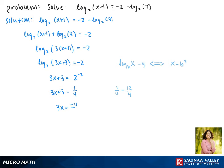So that means 3x equals negative 11 fourths. To solve for x we're going to divide both sides by 3, which gives us x equals negative 11 twelfths.